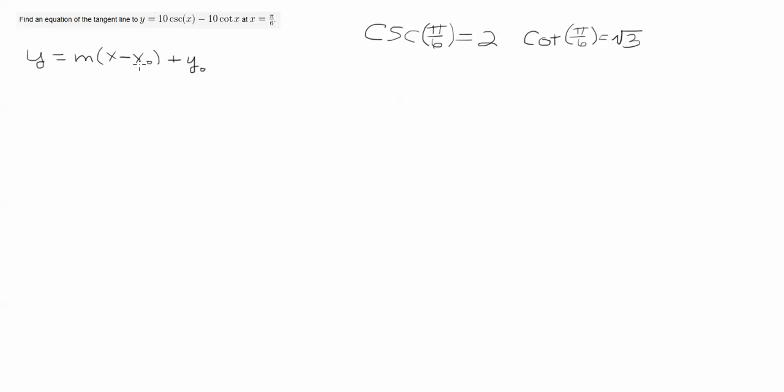Now we need to know what x naught, y naught, and m are, because y and x are the variables. So I'm just going to write down what those are. So x naught, of course, is the point that's the coordinate that's given to us, pi over 6.